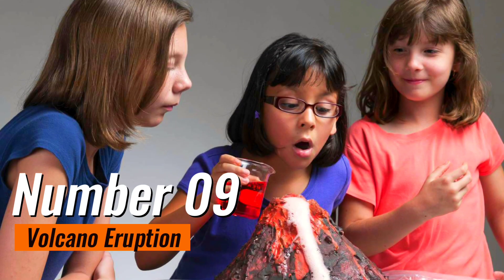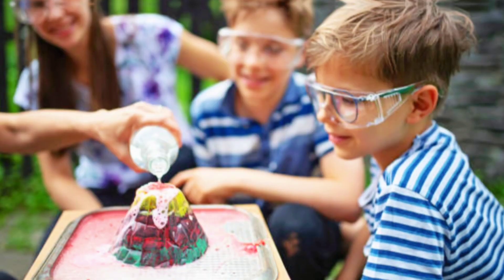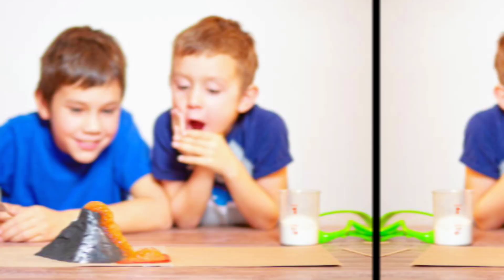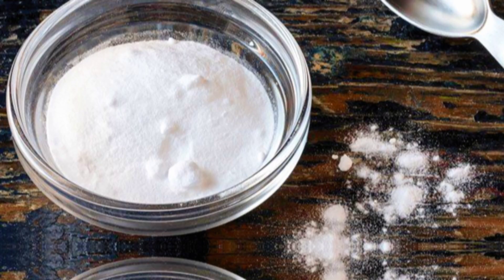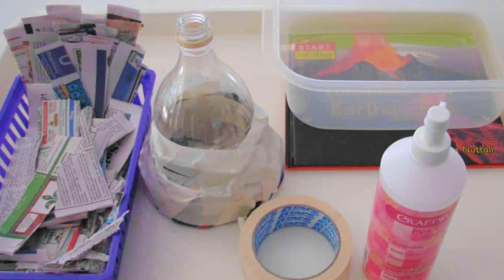Number 9. Volcano Eruption. The volcano eruption experiment is a classic and exciting science activity that will spark curiosity and wonder in kids. To create a mini volcano, you will need baking soda, vinegar, a small plastic bottle, and a tray or container to catch the eruption.